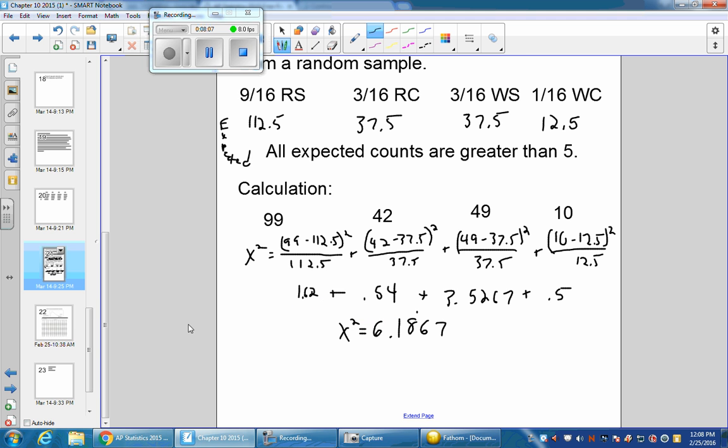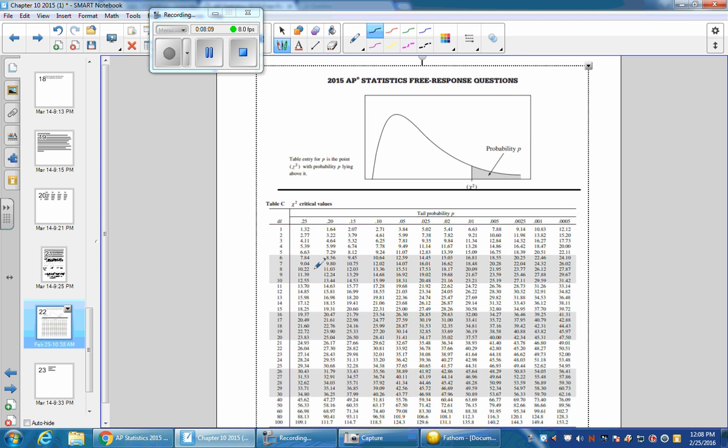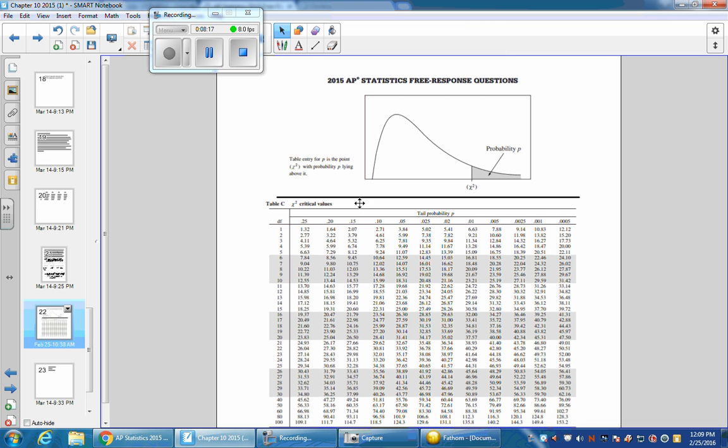Now we look at the degrees of freedom. There were four data points, so that category minus 1 brings us to 3.